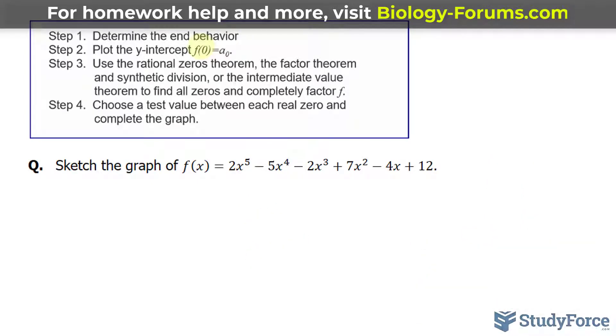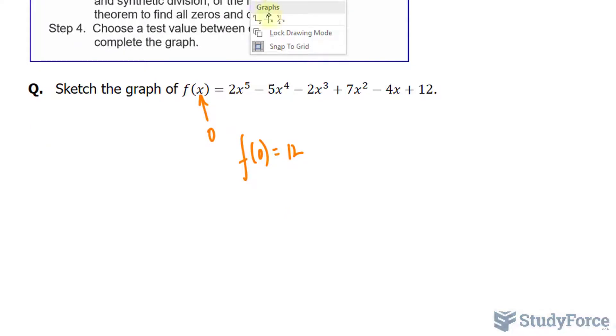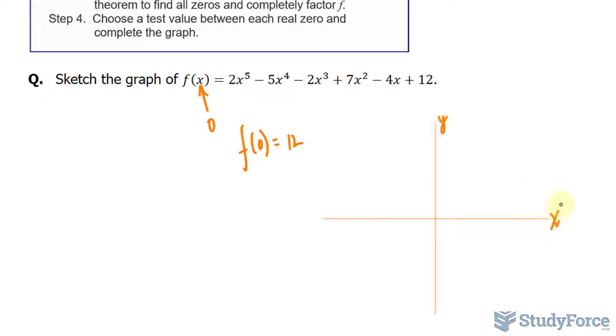Moving on to step number two, plot the y-intercept where the function is set to x is equal to 0. So I'll set x equal to 0, and what I will find is that f at 0 is 12 in this particular case. So let me start to sketch what this is starting to look like. This is our y-axis, this is our x-axis, and we have a point definitely at 0 and 12. And we know that it will go this way, and it will start below the x-axis.